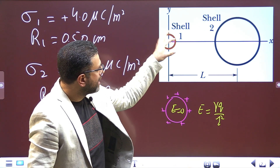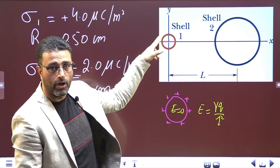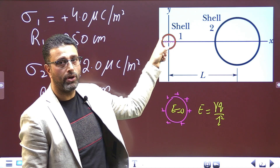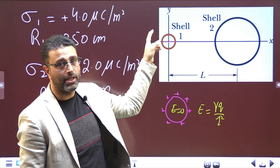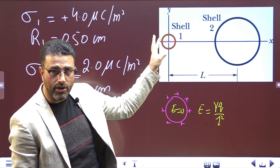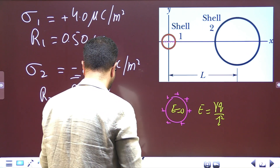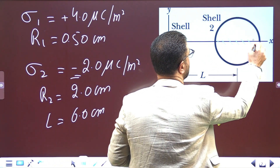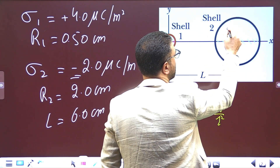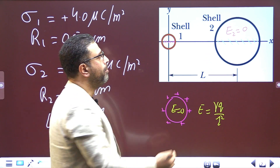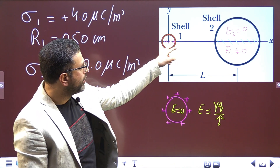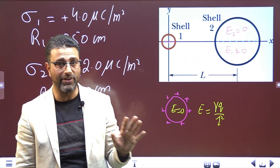For points lying within shell one, the field due to shell one is zero, but there will be a nonzero field due to shell two, so net field is not zero inside shell one. This is a non-conducting shell. Same applies to the region inside shell two: shell two contributes nothing there, but shell one contributes a nonzero field. So net field cannot be zero inside either shell.